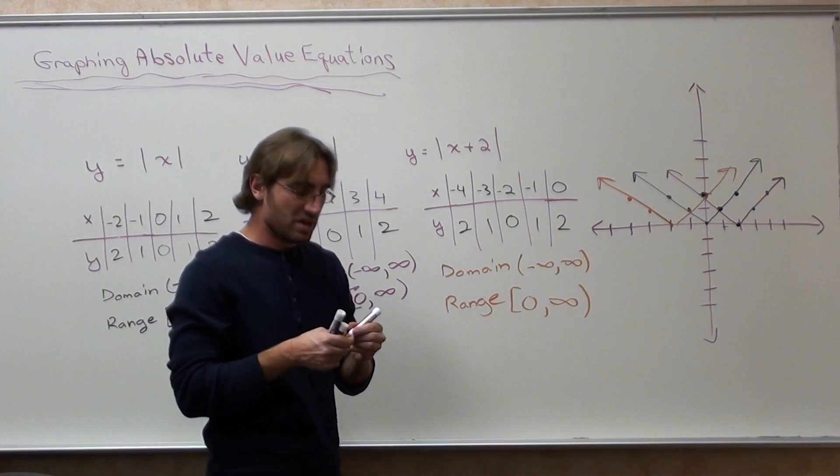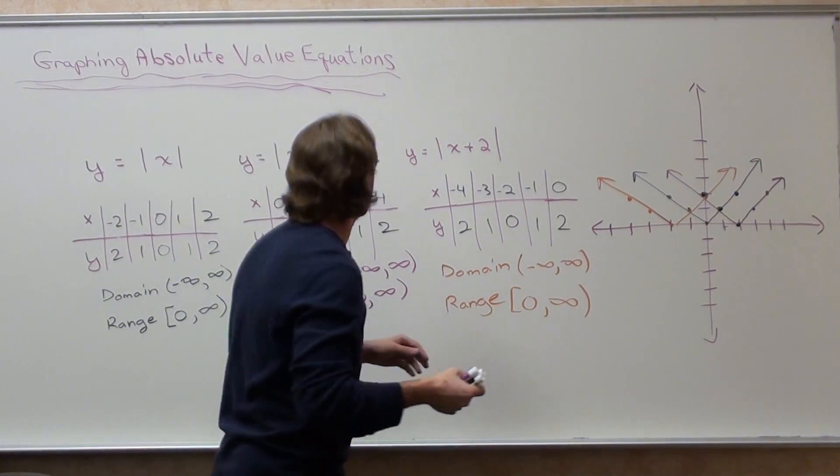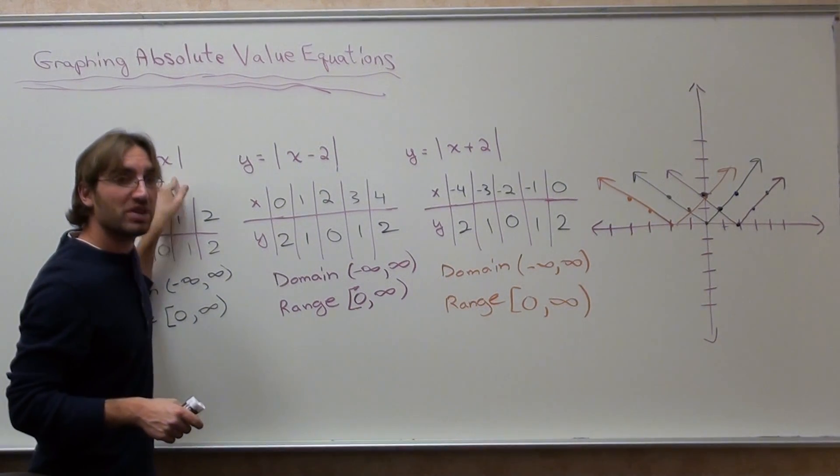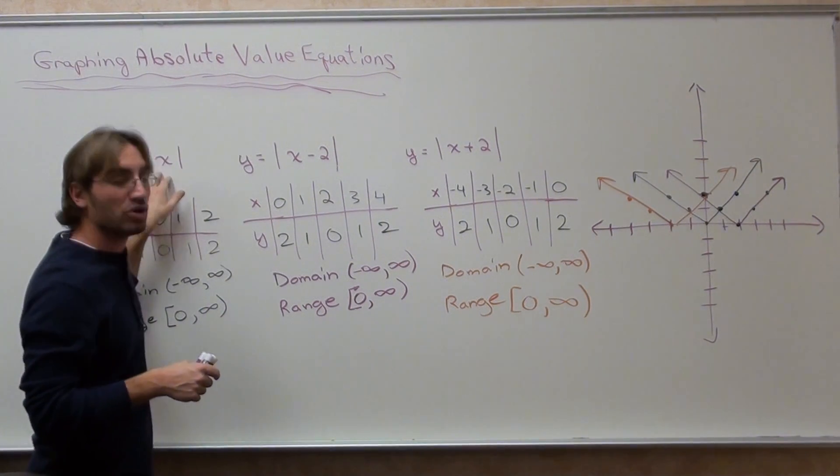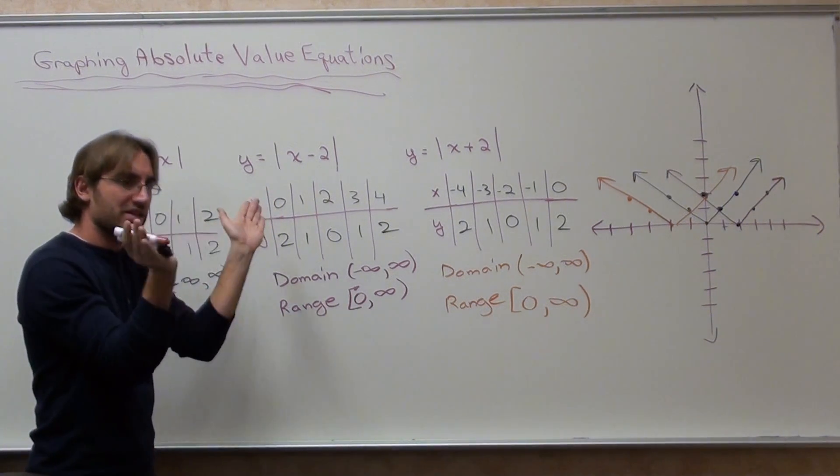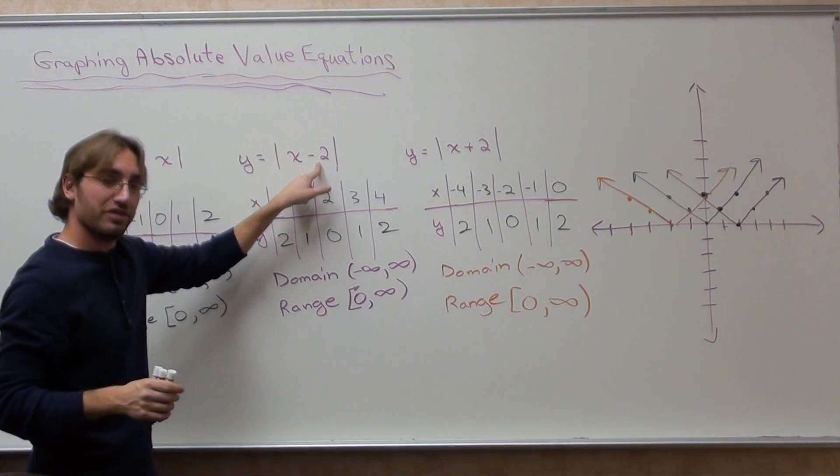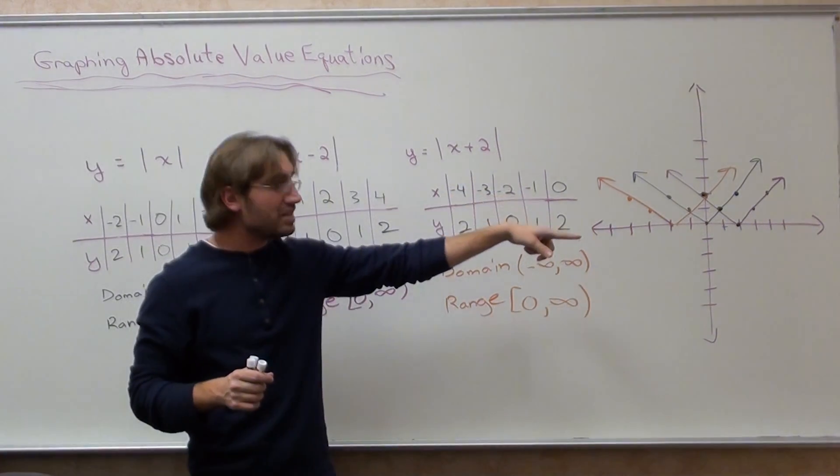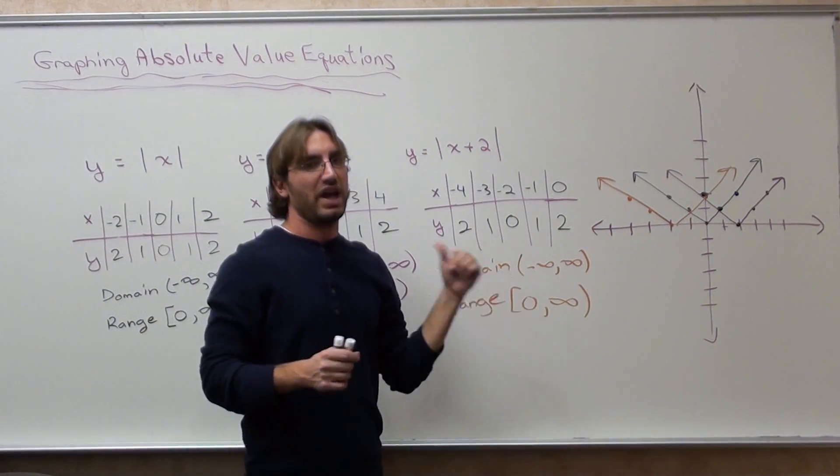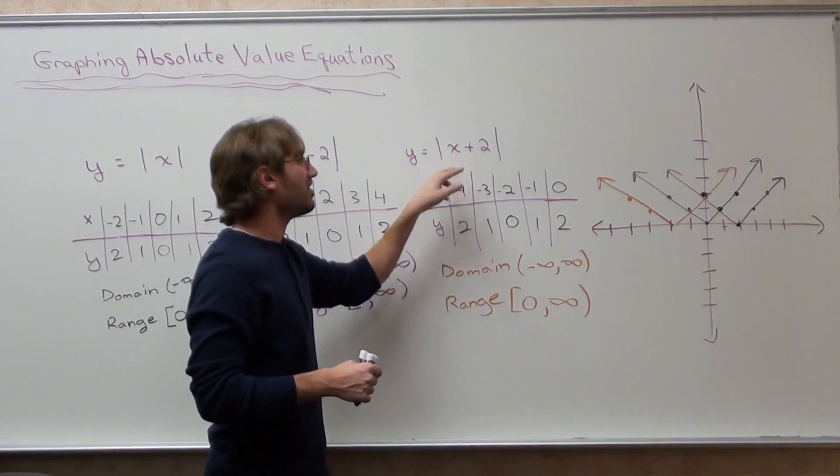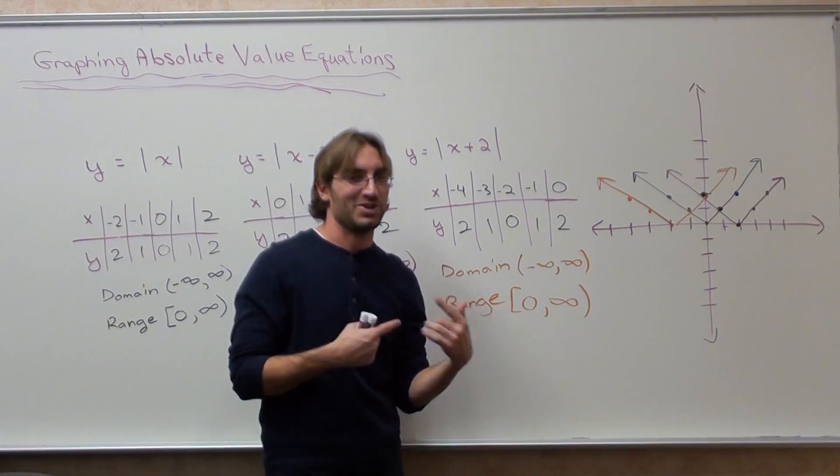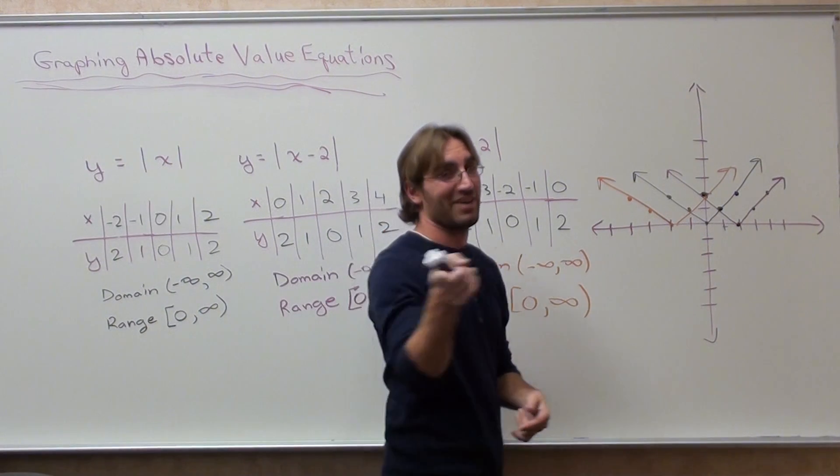That's pretty much it. If there's anything you have to learn from this lesson, it's this: If there's no value inside the absolute value with the x, it starts at zero. If it's negative, then it shifts to the right. If it's positive, it shifts to the left. Now if there's a number in front of the x, that changes it up a little bit, and we're going to do that in our next lesson. With that said, have a great day. Goodbye.